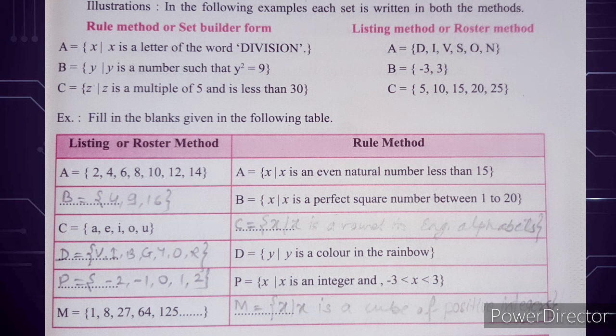Next: C is the set of all z where z is a multiple of 5 and less than 30. We list multiples of 5 up to but not including 30, so the answer is {5, 10, 15, 20, 25}. If you include 30, the answer will be wrong because the condition is 'less than 30.' This concludes the topic of sets; next time we will look at practice exercises.